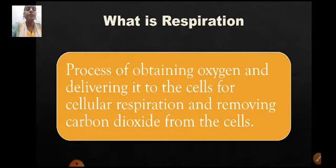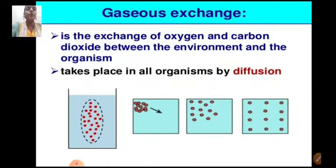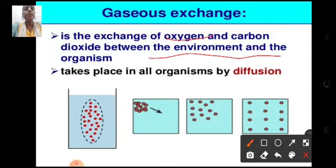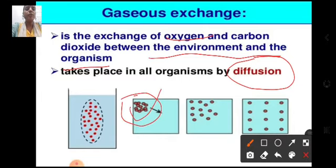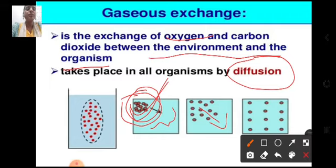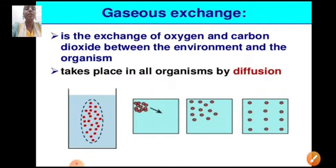Respiration is the process of obtaining oxygen, delivering it to the cells for cellular respiration, and removing carbon dioxide from the cells. Gaseous exchange is the exchange of carbon dioxide and oxygen between the environment and the organism. It takes place in all organisms by the process of diffusion — the movement of molecules from a region of higher concentration to a region of lower concentration. Molecules move by random movement toward areas of lower concentration until equilibrium is reached.